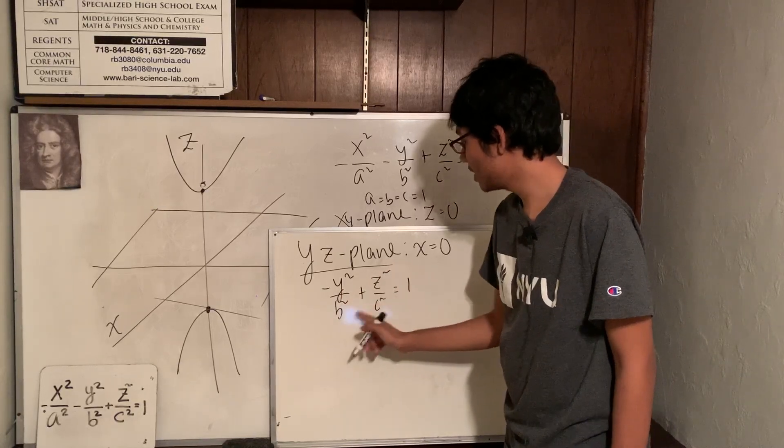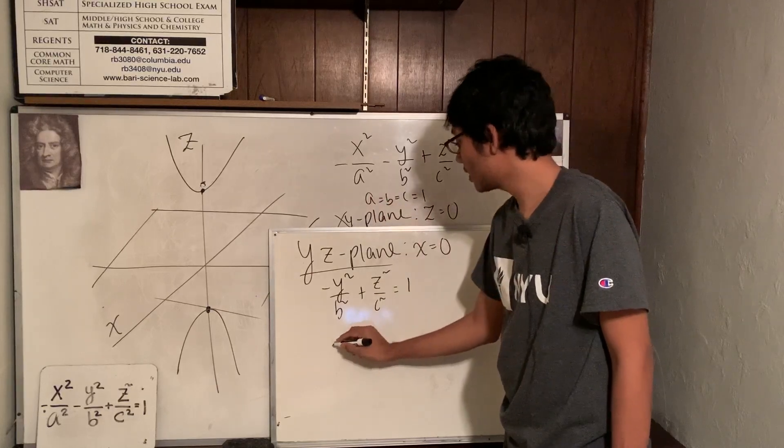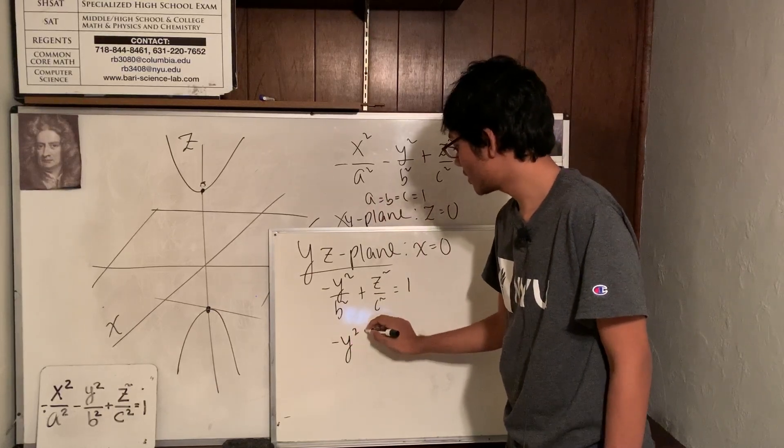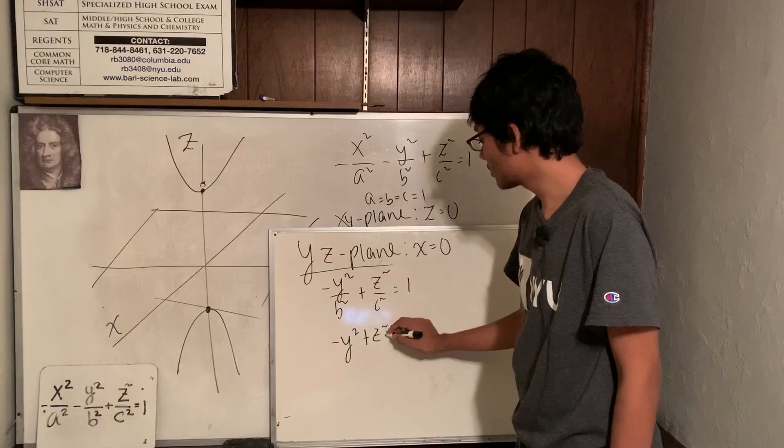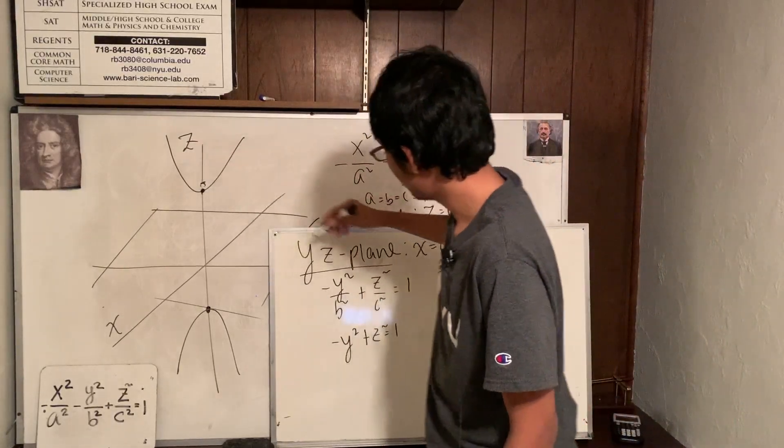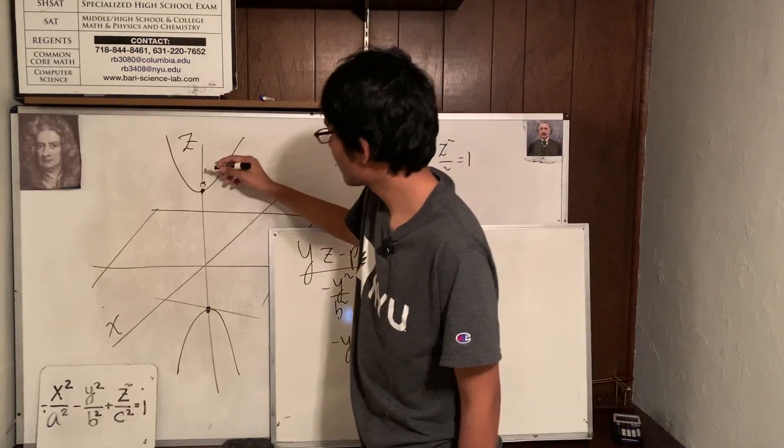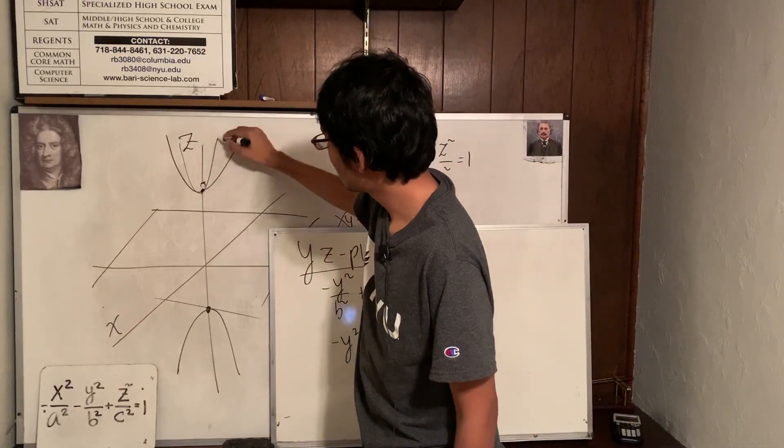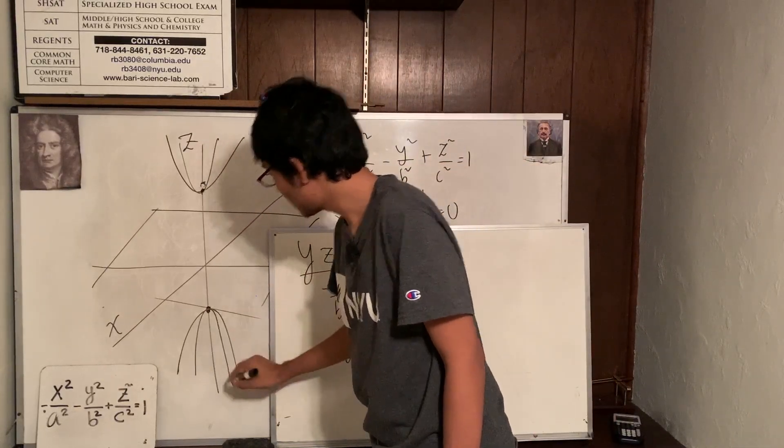And of course, I fix b and c. I make them equal 1. So, I'm left with minus y squared plus z squared is equal to 1. And so, same story. I'm left with a hyperbola, but on the y, z plane. So, you can kind of imagine, I got a hyperbola here and a hyperbola there.